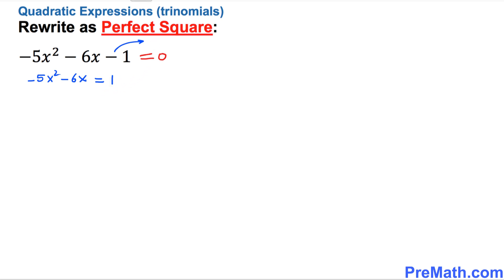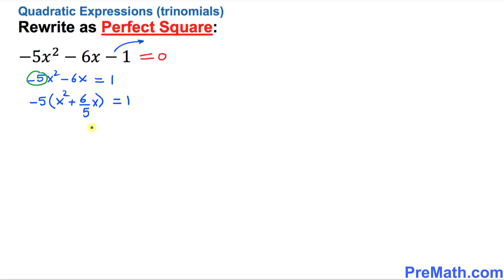Now I want you to look at the leading coefficient of x², which is negative 5. I want you to factor that out on the left hand side. If I factor out negative 5, we end up with negative 5 times (x² + 6/5 x) equals 1.